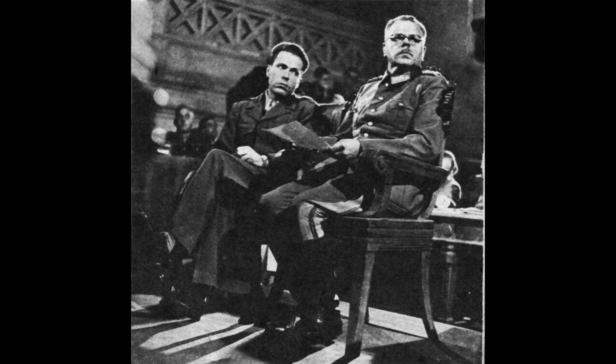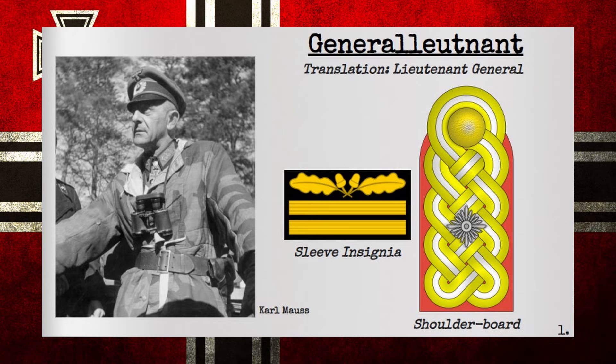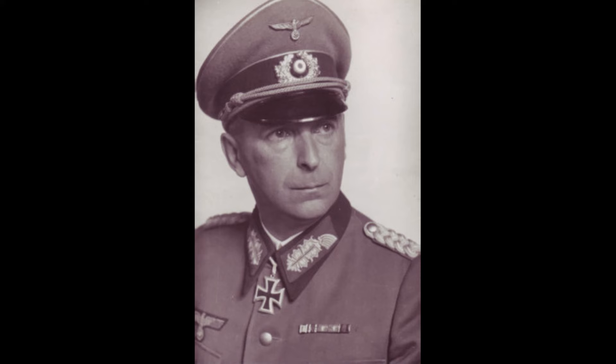The Generalleutnant, or the Lieutenant General, was the second lowest rank that a general officer could hold within the German army. Its capacity for field commanding would contain, but not be limited to, either a corps or a division. This would approximately command between 20,000 and 60,000 men, though it could be higher or lower depending on the branch of service. Its insignia held a singular pip over a braided gold epaulette, and its notable holders include Friedrich Fromm and Karl Marx.